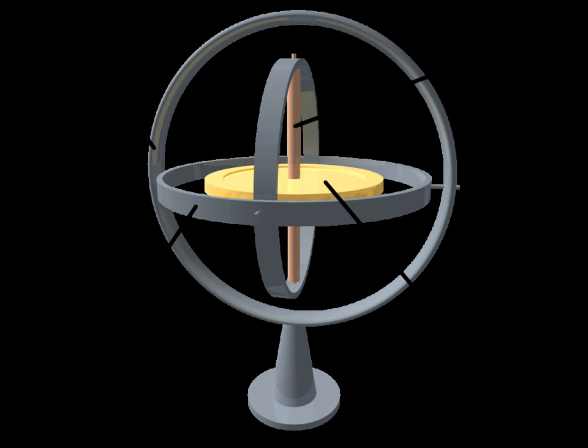A gyroscope is a wheel mounted in two or three gimbals, which are pivoted supports that allow the rotation of the wheel about a single axis. A set of three gimbals, one mounted on the other with orthogonal pivot axes, may be used to allow a wheel mounted on the innermost gimbal to have an orientation remaining independent of the orientation, in space, of its support.